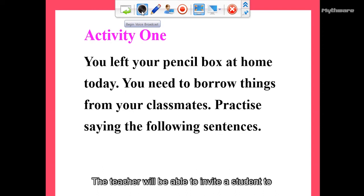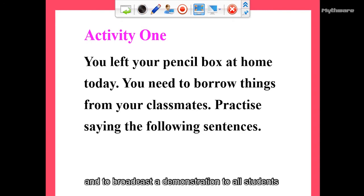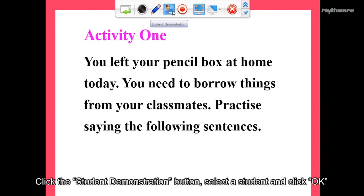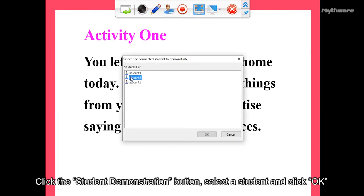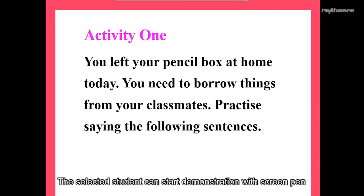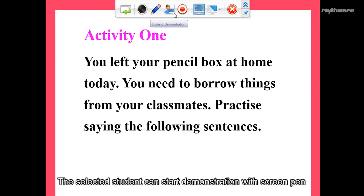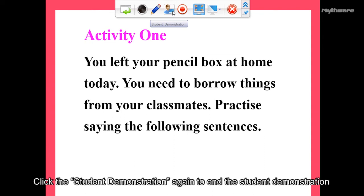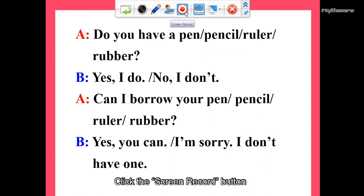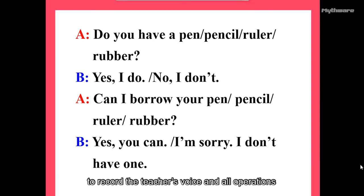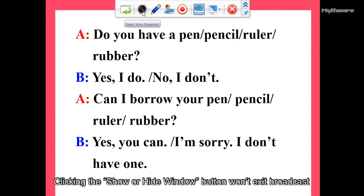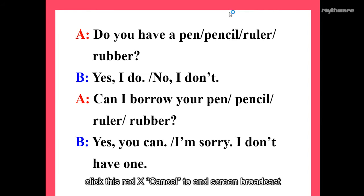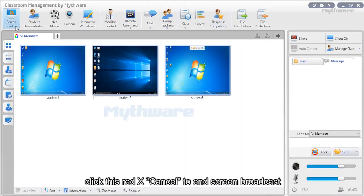The teacher can invite a student to take control of the teacher's computer and broadcast a demonstration to all students. Click the student demonstration button, select a student, and click OK. The selected student can start demonstration with a screen pen. Click the student demonstration again to end it. Click the screen record button to record the teacher's voice and all operations. Click the red X to end the screen broadcast.